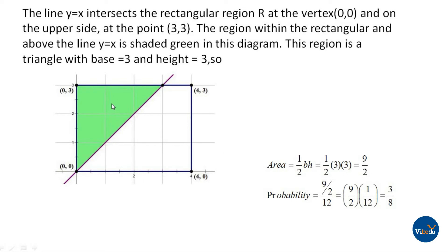For the point where y is greater than x, the area is 9/2. So 9/2 times 1/12 simplifies to 3/8.